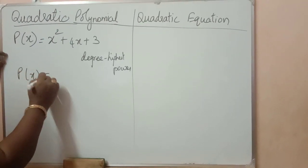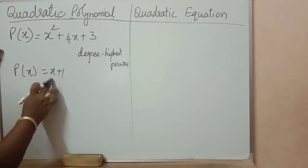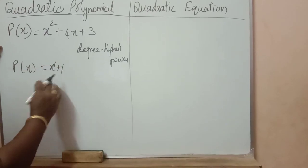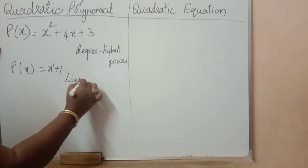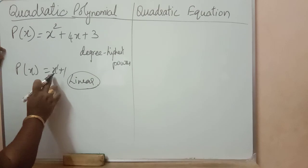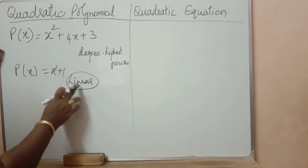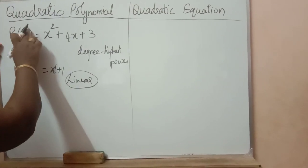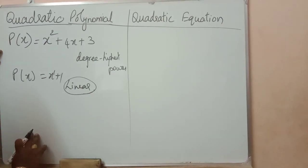Suppose P of x is equal to x plus 1. Degree of this polynomial is 1, so it is called a linear polynomial. If degree is 1, the highest power is 1, it is called linear polynomial. If the highest power is 2, it is called quadratic polynomial.